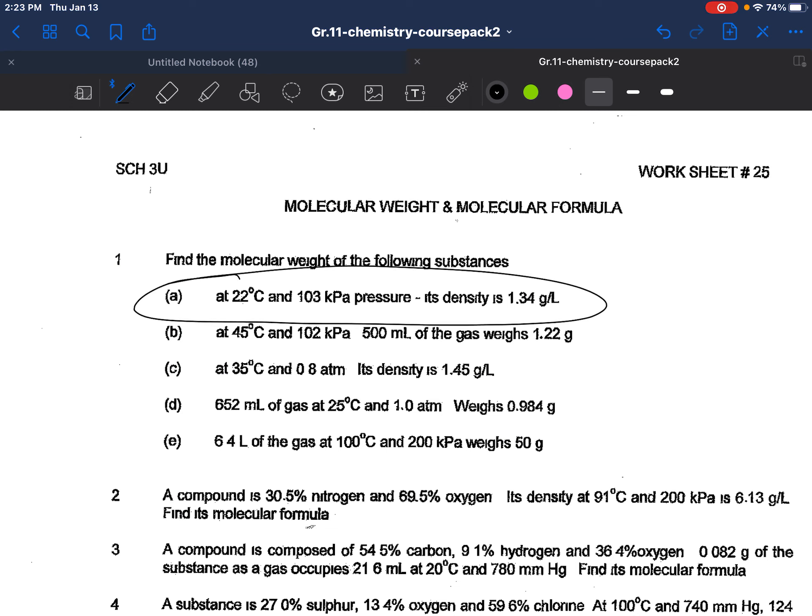Find the molar mass or molecular weight for the following substance: something that has 22 degrees Celsius, 103 kPa, and has a density of 1.34 grams per liter. Now make sure when you're doing these kind of questions that the density is given to you in grams per liter. If the density is given to you in grams per milliliter, you're going to have to change that to liters or else it's not going to work. We saw earlier that D is equal to PM over RT. So in this case, we're looking for M, right? We're looking for molar mass. So that is DRT over P.